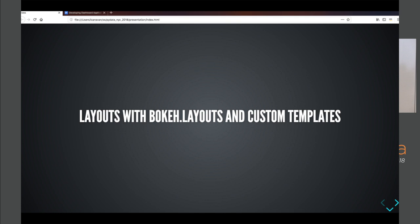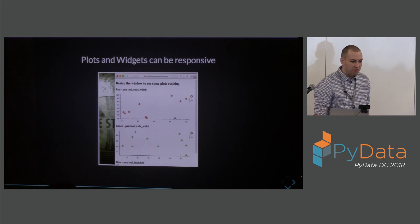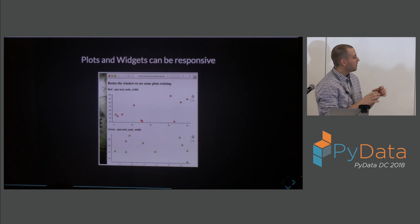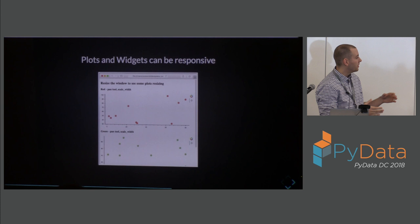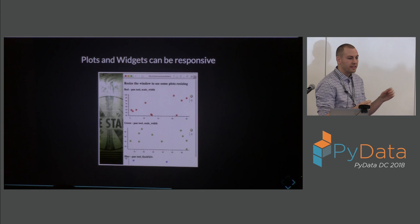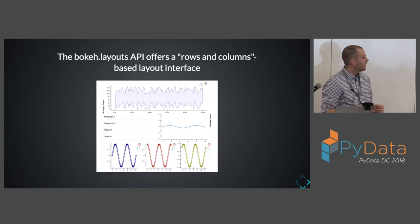Let's talk about layouts. Bokeh plots can be responsive — you can set fixed sizes, but if you want them to naturally expand to fit a web page, that's something we can do. We also have various responsive modes: if it's important to maintain aspect ratio you can set that, or you can have it expand in whatever dimension makes sense. On top of that, there's a pure Python API to lay out sets of plots in a row and column style.